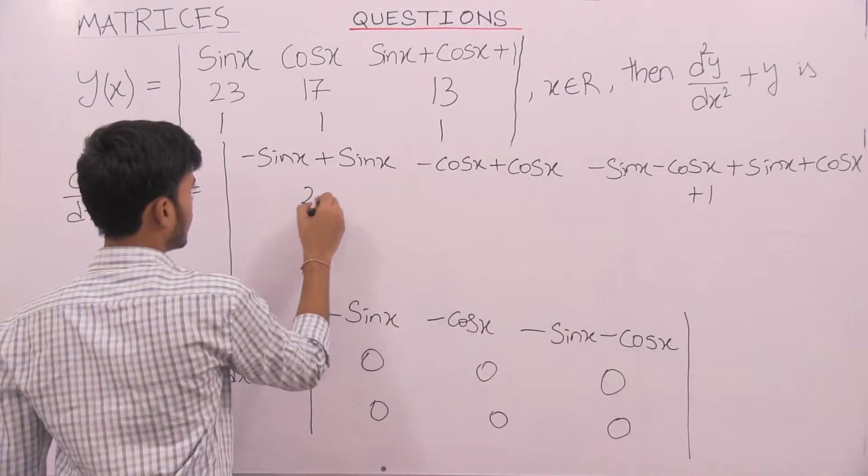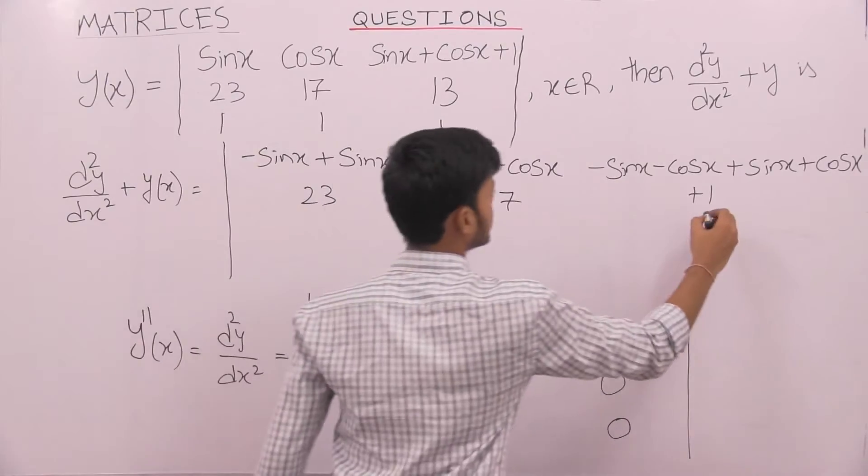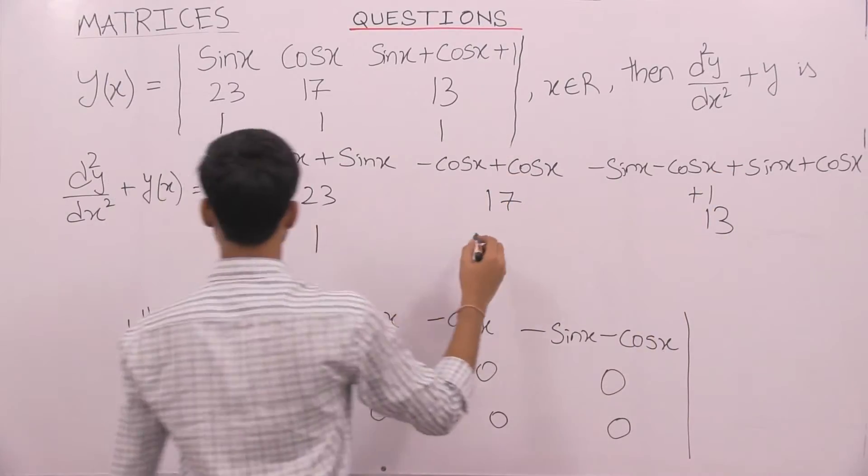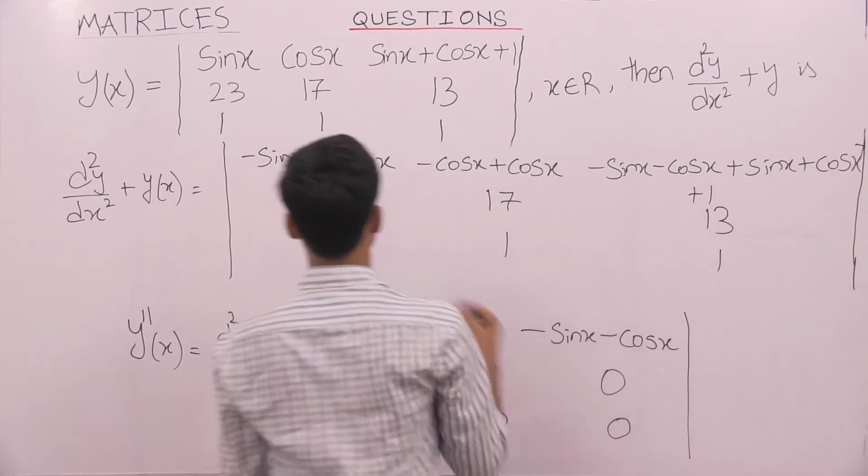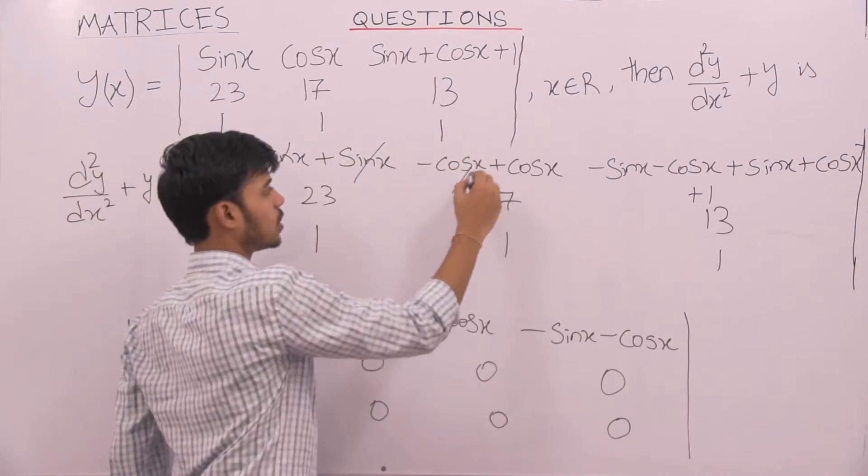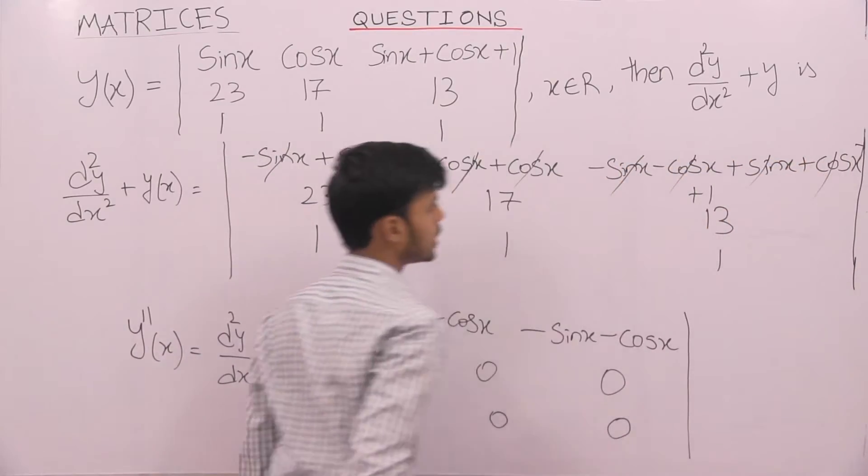And as these all are zeros, we can directly write these constants, this one belongs to the upper one, 1, 1 and 1. So, minus sin x plus sin x plus sin x get cancelled, minus cos x plus cos x, sin x cos x minus sin x minus cos x.